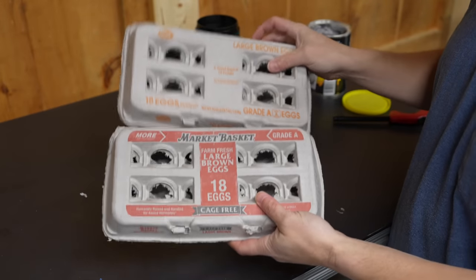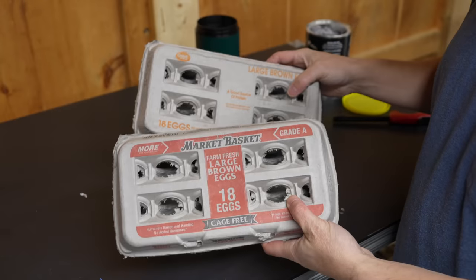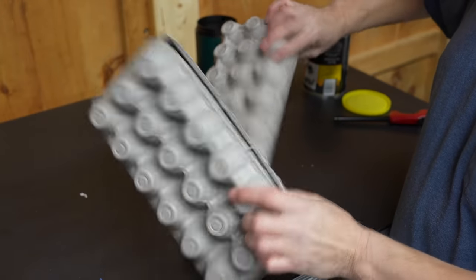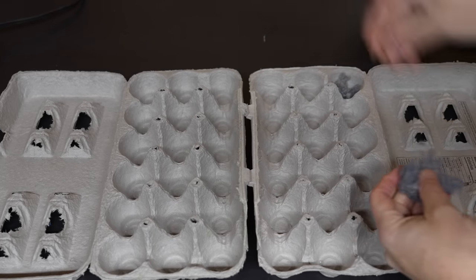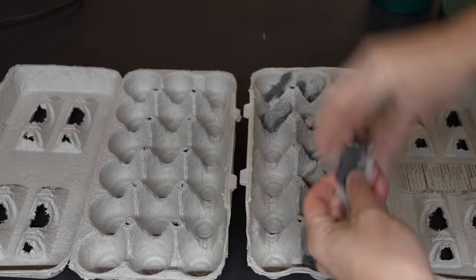To actually form your fire starters, you're going to want to use some egg cartons. Don't use the ones that are foam, you've got to use the cardboard versions. These 18 egg ones are perfect because you can make a ton of them at once. You're just going to take a small amount of dryer lint and put it into each one of the egg carton holes.